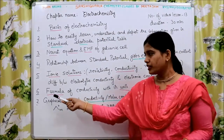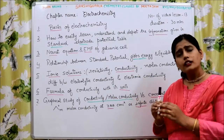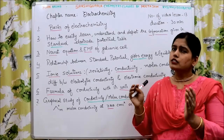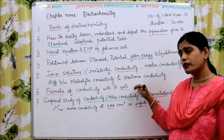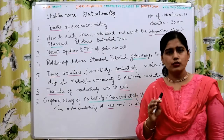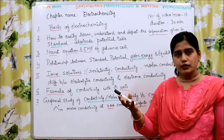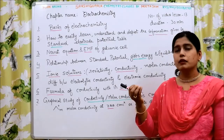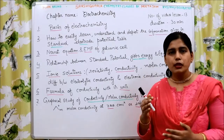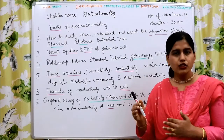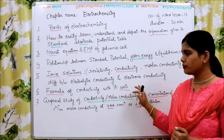Coming to the sixth module — the formulas of conductivity with their units. This is a very, very important sub-topic of the chapter electrochemistry. This topic involves many formulas, their respective units, the calculation part, and interconversion of units. This module is very important in itself.